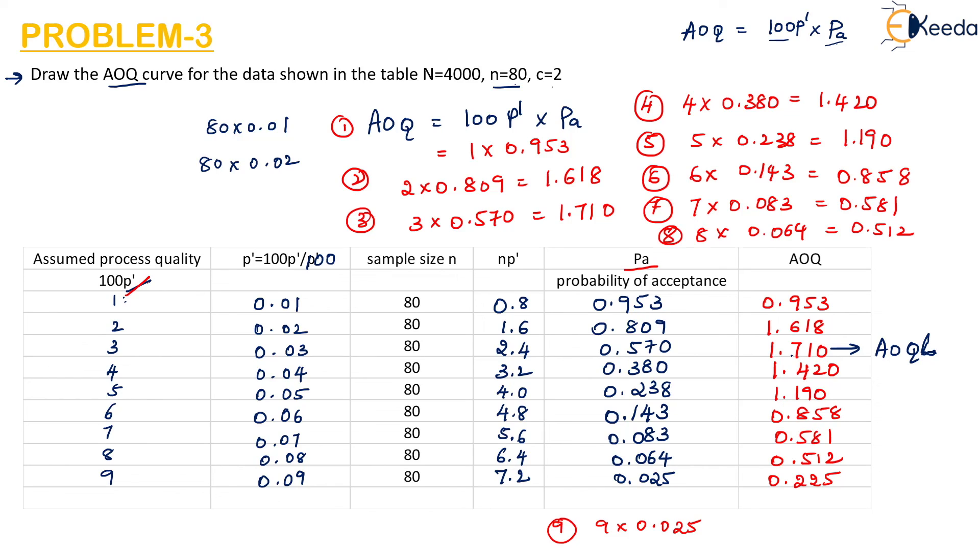This is the highest point which we are getting from this probability of acceptance into the 100% defective. When you multiply these two, the highest point which we get is the average outgoing quality limit and the maximum outgoing quality cannot exceed this limit. I hope you have understood the topic. Thank you.